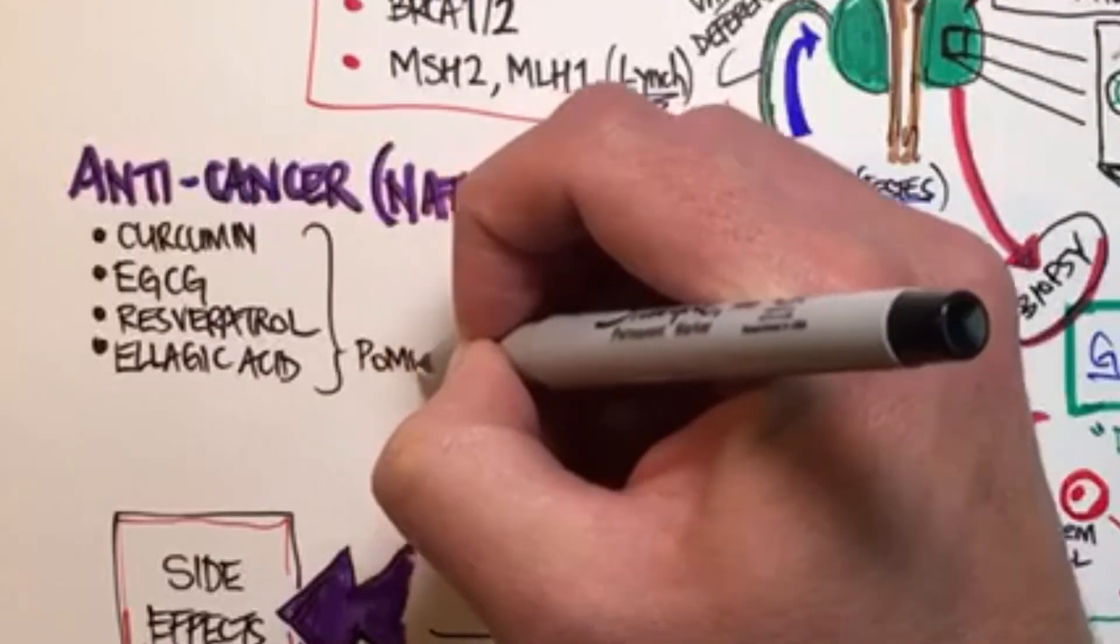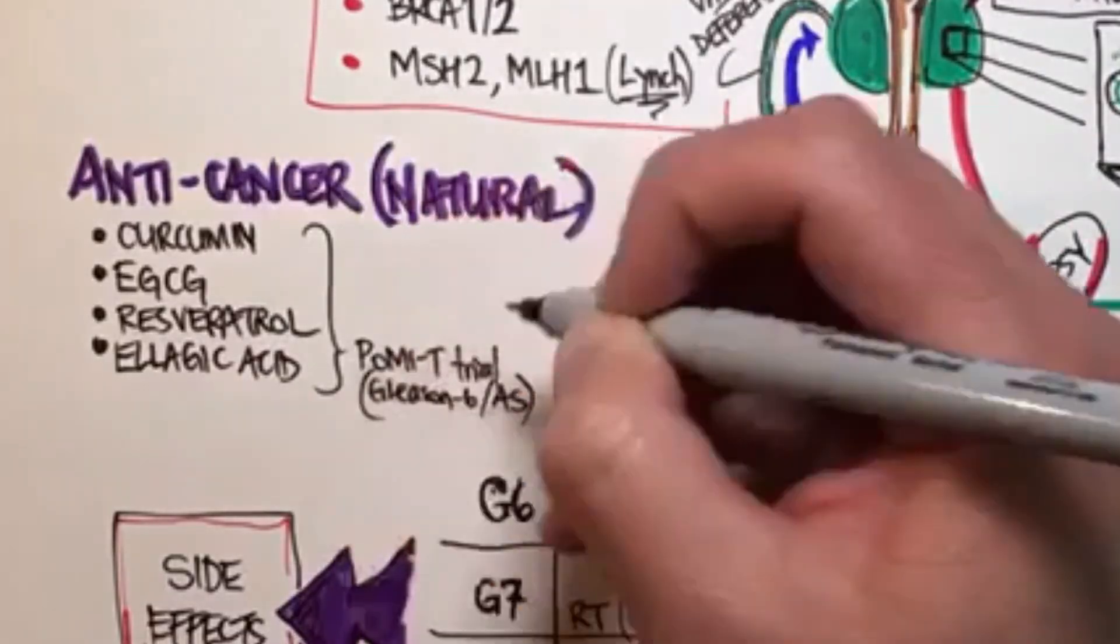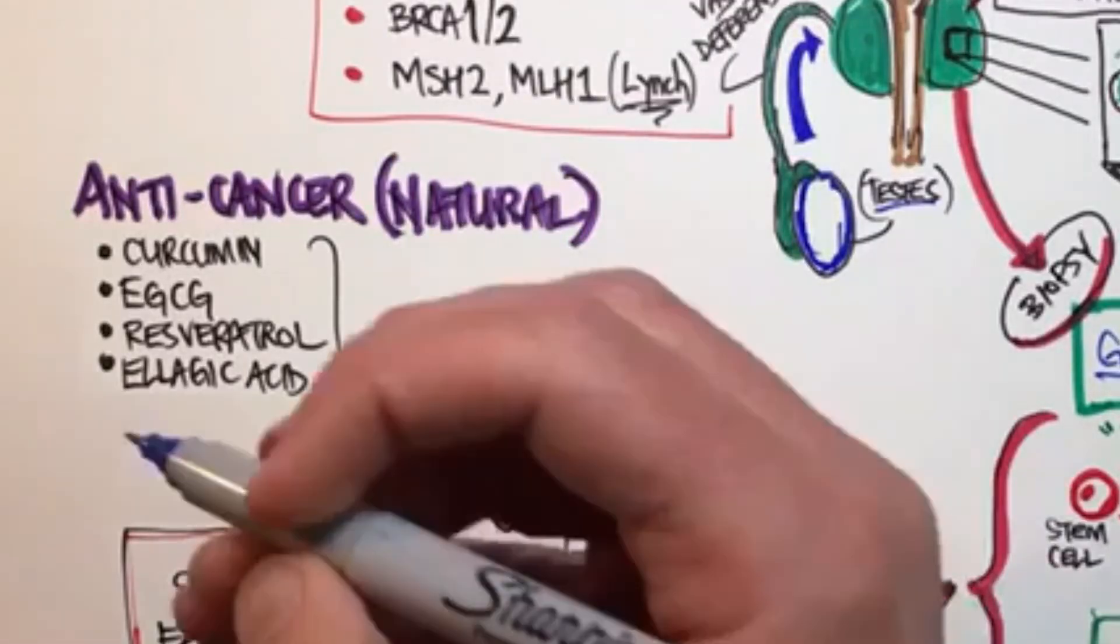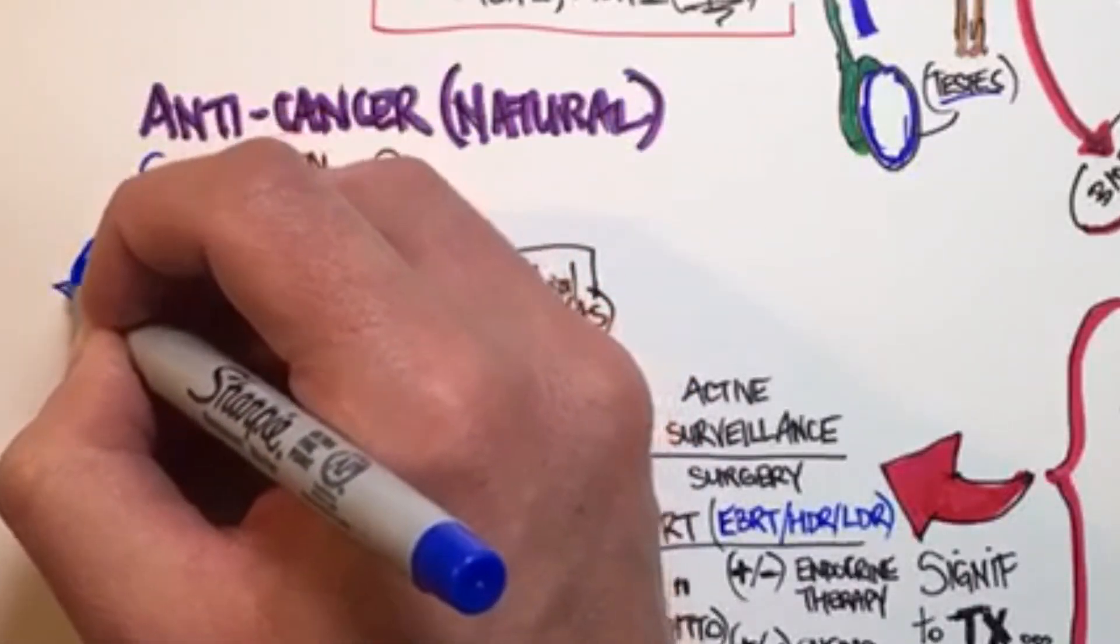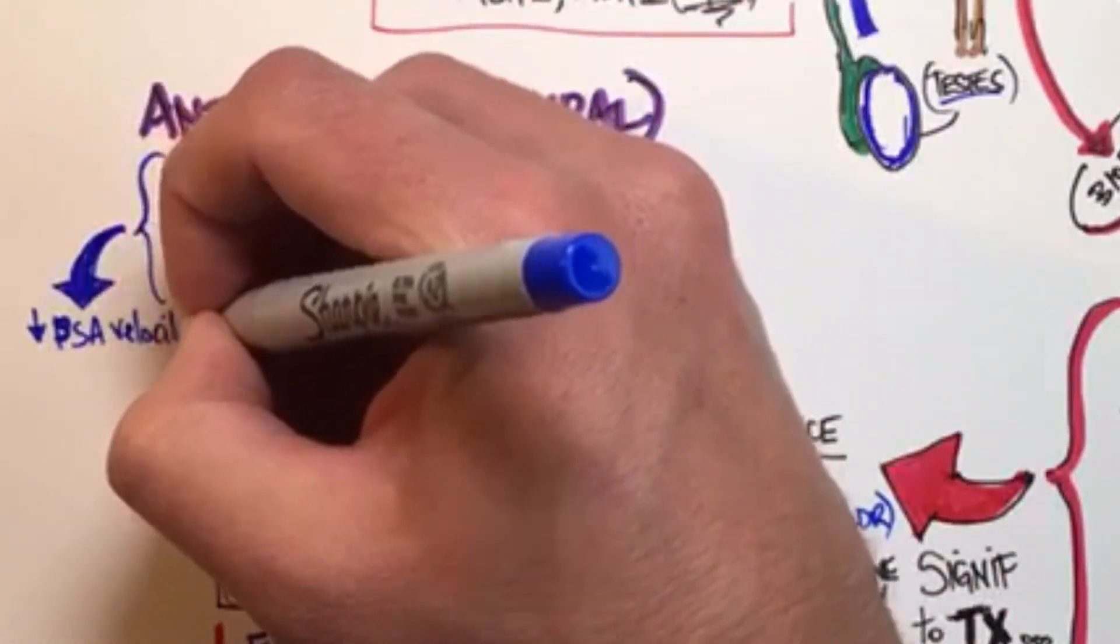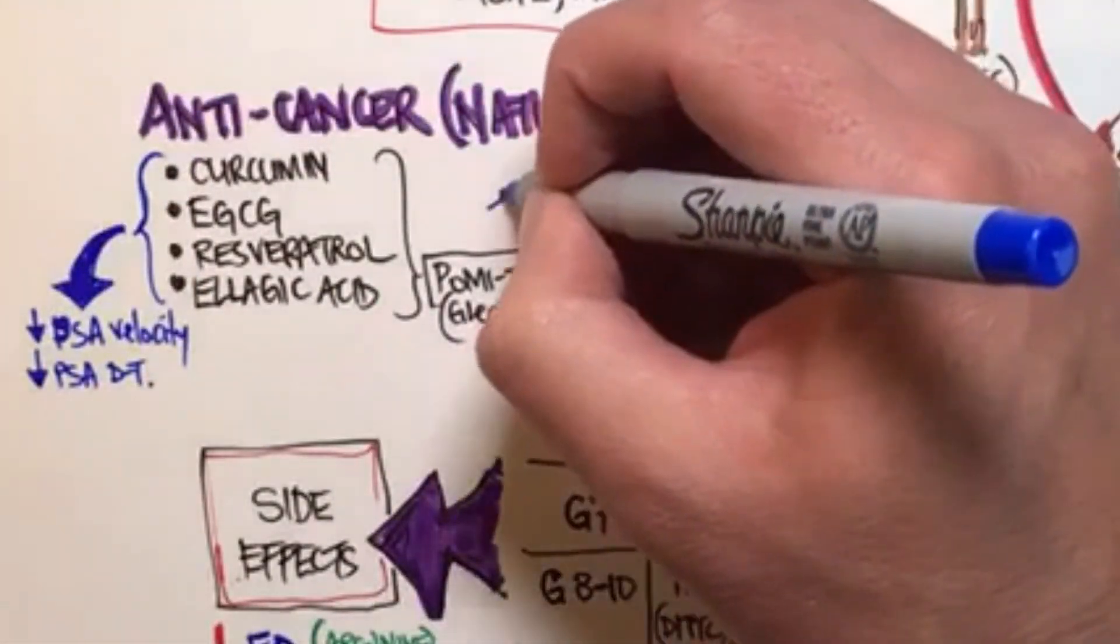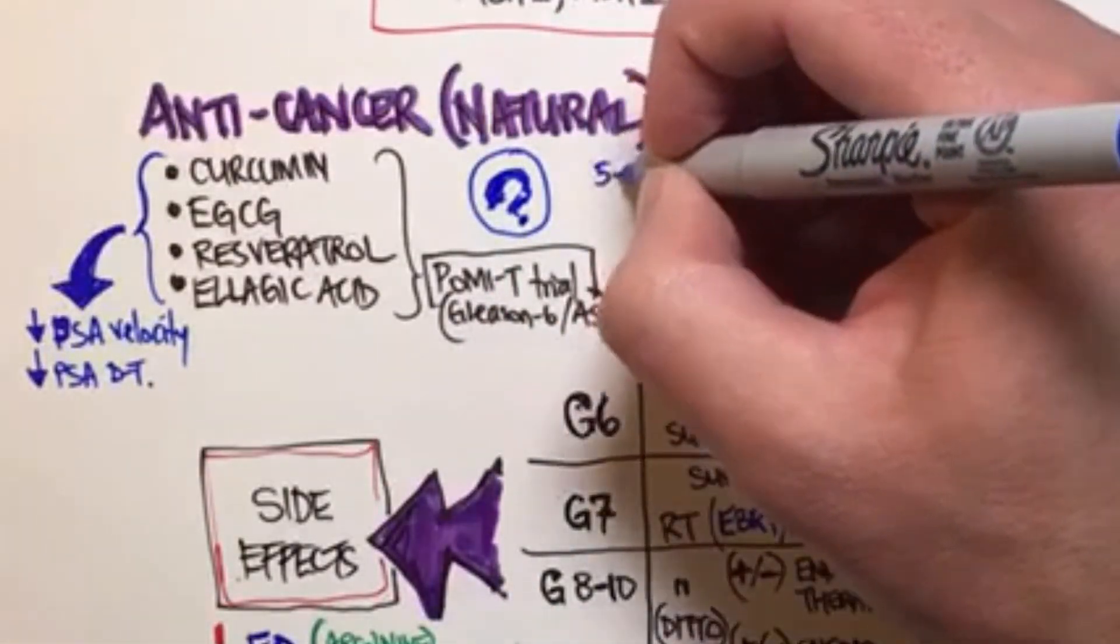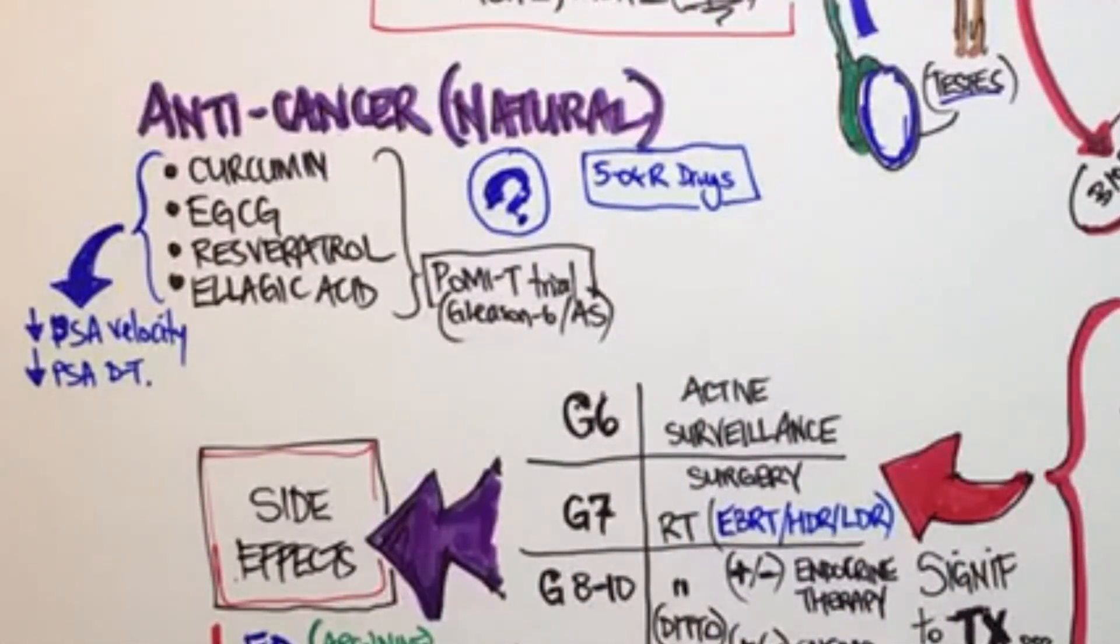Now there was a trial done called the pomegranate trial. It was with men that had Gleason 6 that were on active surveillance, and it assessed men on or off of this combination of natural compounds. And what they found was only in the treatment group compared to the control that did not receive these natural compounds, only the group that received the natural compounds saw a decrease in their PSA velocity, a decrease in their PSA doubling time, and they did not have to enter into active treatment. So we see biological activity against prostate cancer.